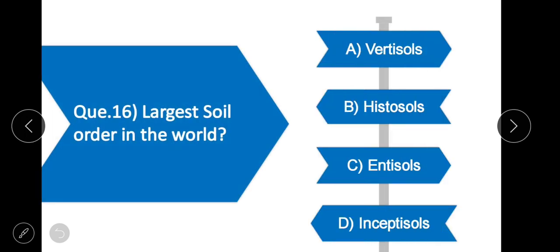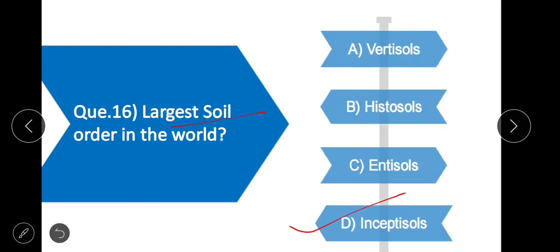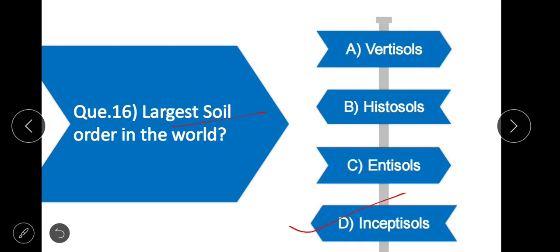Question 16: The largest soil order in the world — the correct option is option D — Inceptisols. Inceptisols is the largest soil order in the world, contributing about 20% of total geographical area.